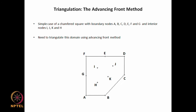Let us see how this works by taking a very simple example. We have a chamfered square whose boundaries have been segmented with linear segments labeled A, B, C, D, E, F, G. There are also four internal nodes H, I, J, K. This example is just to illustrate the process rather than to generate a very refined grid.